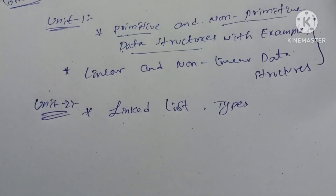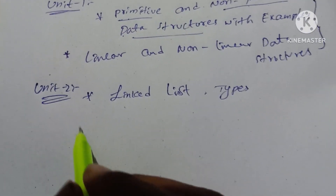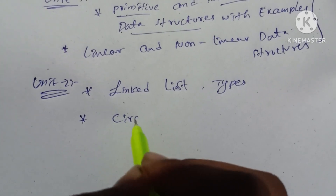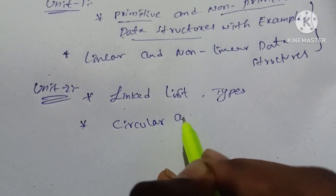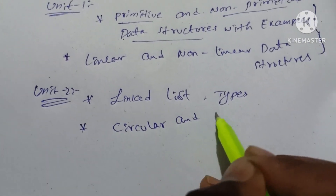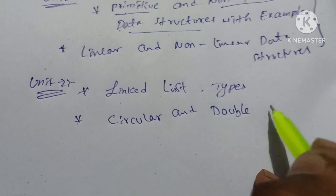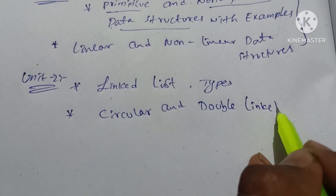Here are the types to save: circular and double linked lists. Circular and double linked lists are key topics in Unit 2.